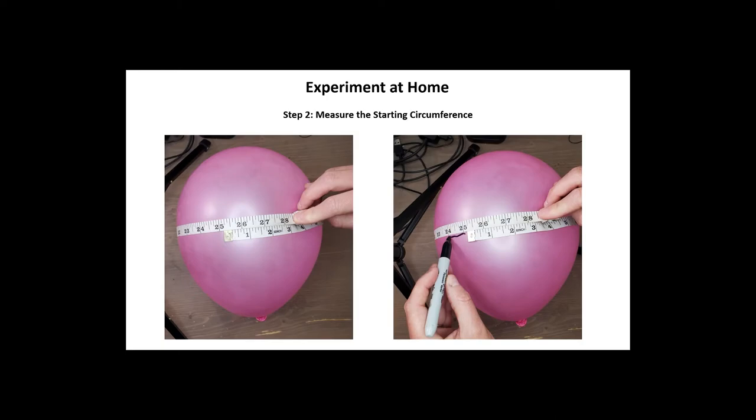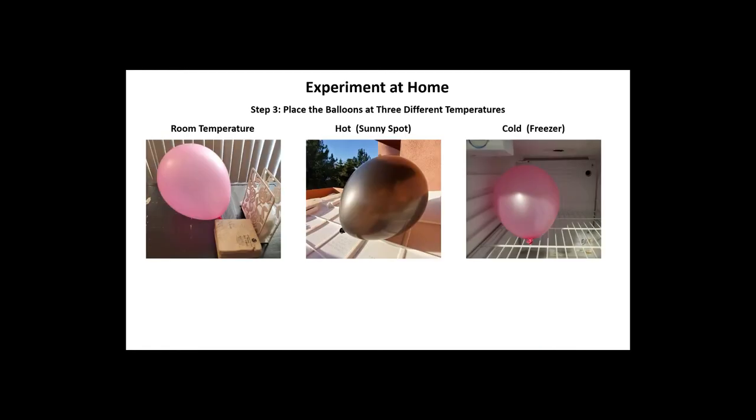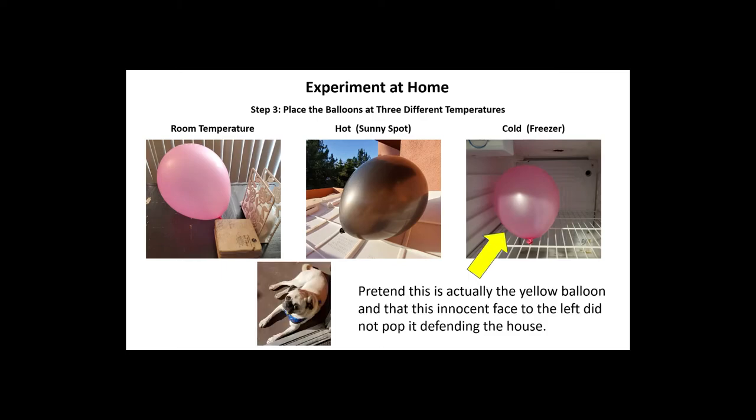Marking where you measured the widest point will help when it comes time to re-measure at the end. On the worksheet we have provided space to take three measurements because this is a good scientific practice to ensure that our measurements are consistent. Because we are trying to evaluate the effect of temperature on the size of the balloon, keep one balloon at room temperature as your control or reference and then use the others for the experiment. Place one in either the freezer if you have room or in an insulated sunny spot such as on a piece of plastic or on the dashboard of the car for about 45 minutes to an hour.